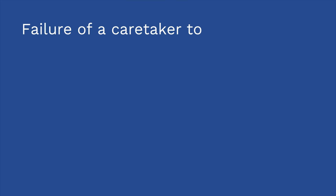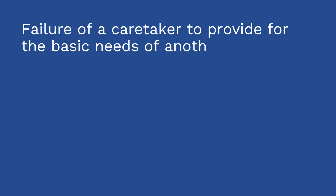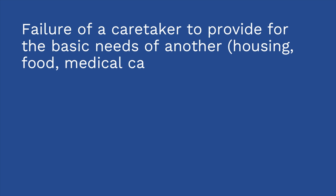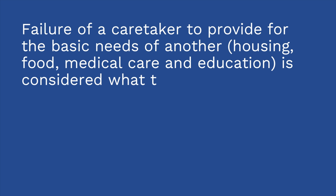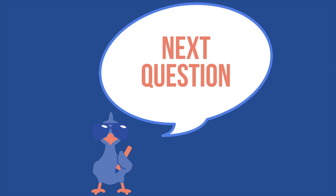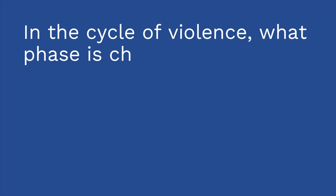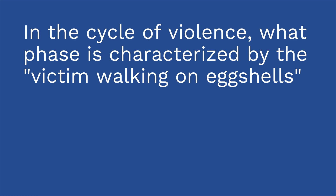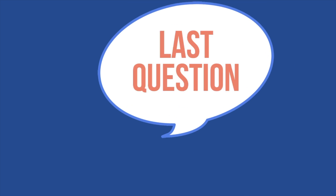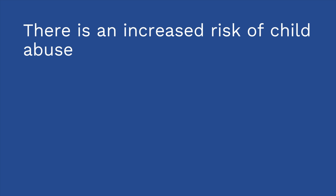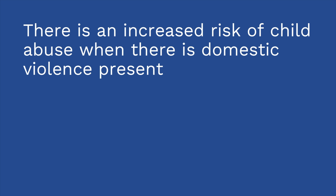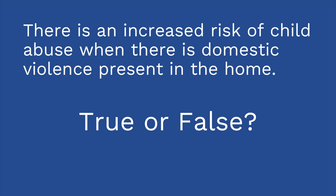Knowledge check time — I have three questions for you. Question number one: failure of a caretaker to provide for the basic needs of another, including housing, food, medical care, and education, is considered what type of abuse? The answer is neglect. Second question: in the cycle of violence, what phase is characterized by the victim walking on eggshells? That would be the tension-building phase, which is the first phase of the cycle. And the last question is true or false: there is an increased risk of child abuse when there is domestic violence present in the home. The answer is true.